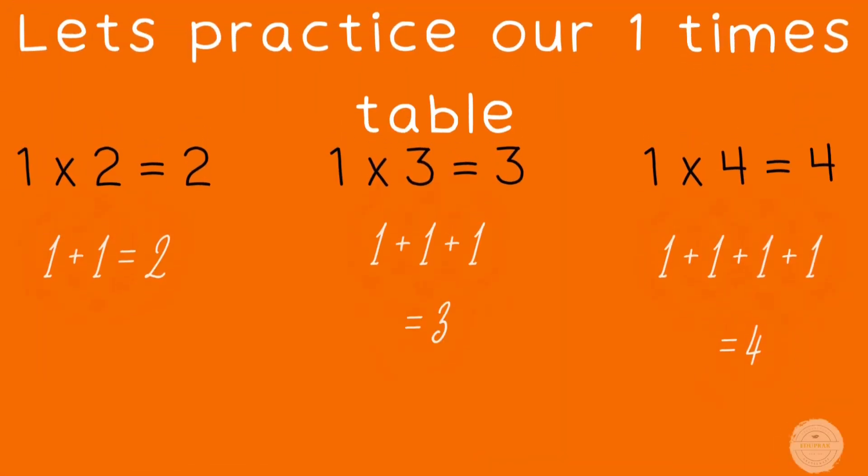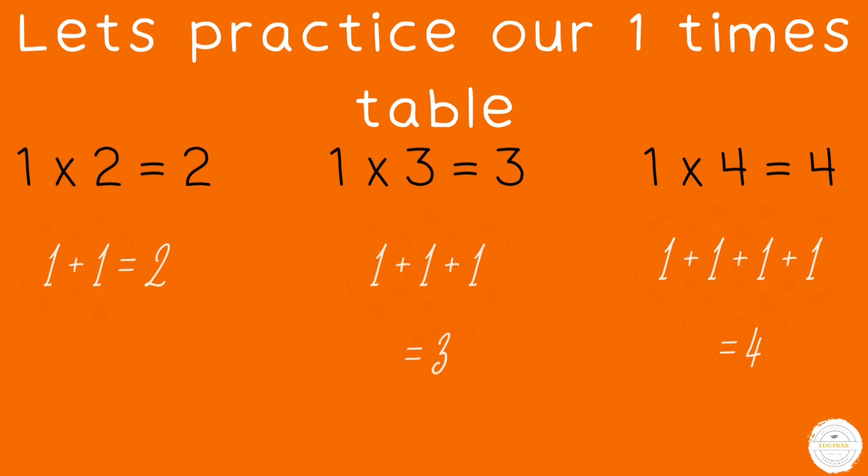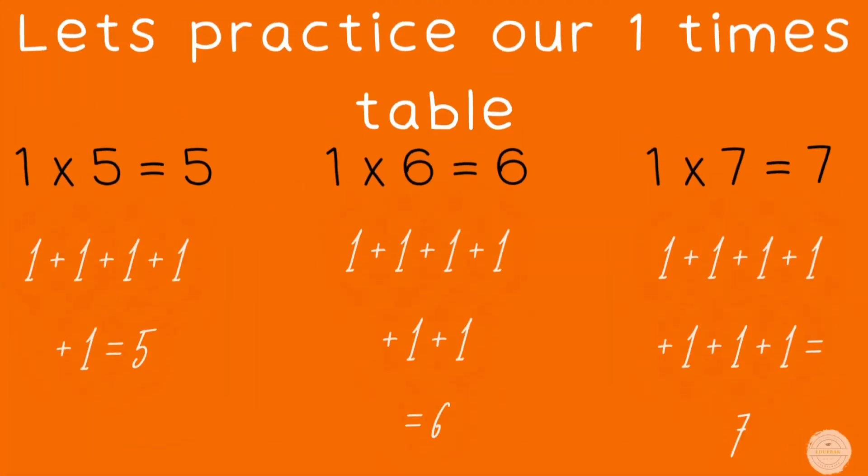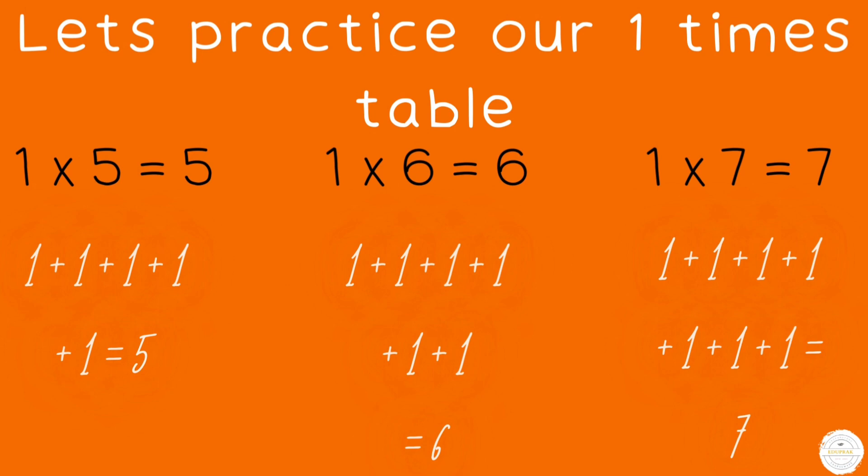Let's continue with our one times table. One times two equals two, which means one plus one equals two. One times three equals three: one plus one plus one equals three. One times four equals four, which means one plus one plus one plus one will equal four. One times five equals five.